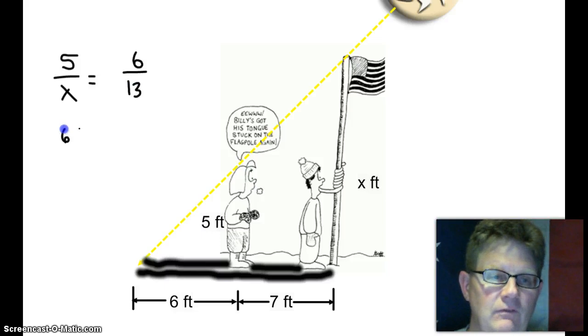Cross multiply. Sixty-five equals six x. Divide both sides by six, and we get ten and five-sixths feet.